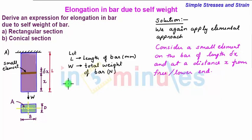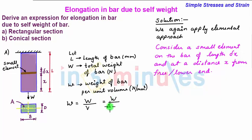Now let us also define another parameter small w which is weight of bar per unit volume and its unit will be newton per mm cube. So small w is given as total weight upon the volume. Now the volume of this uniform cross section bar is equal to cross sectional area A multiplied by length.